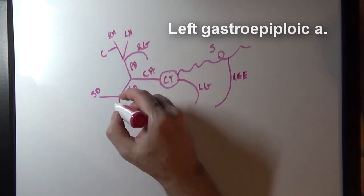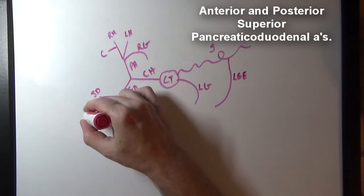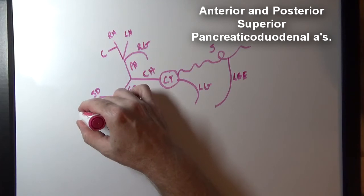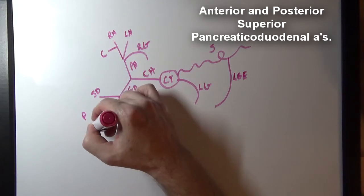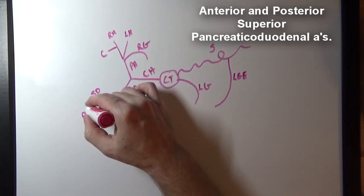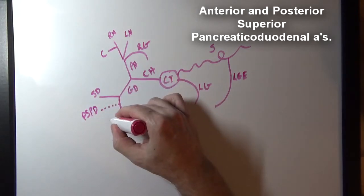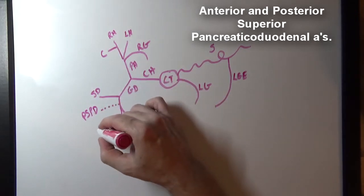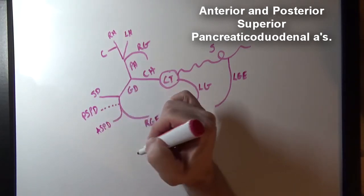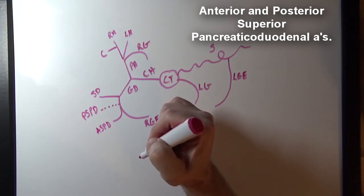Also branching off the gastroduodenal artery, we have the anterior and posterior superior pancreaticoduodenal arteries — here's the posterior one and this would be the anterior one. These will anastomose with the inferior pancreaticoduodenal arteries.